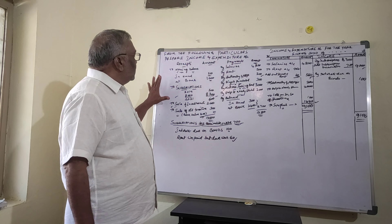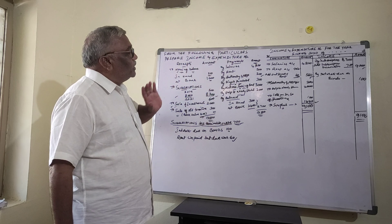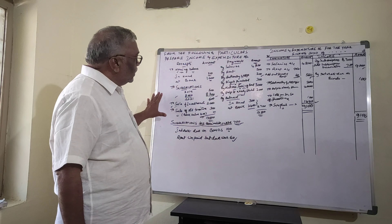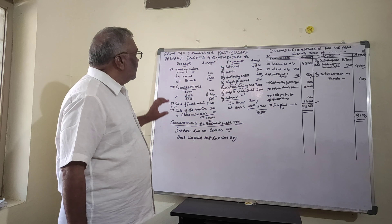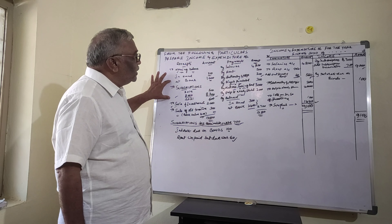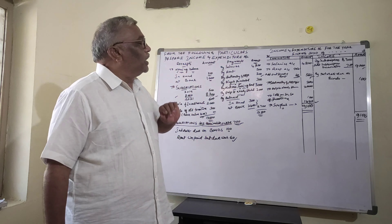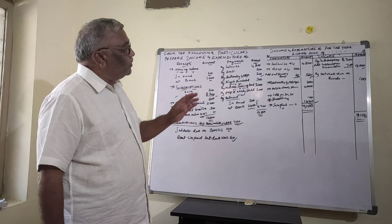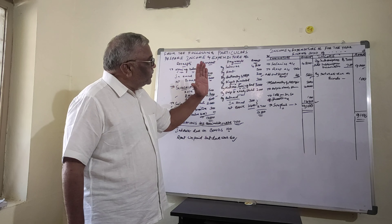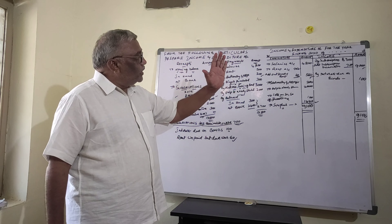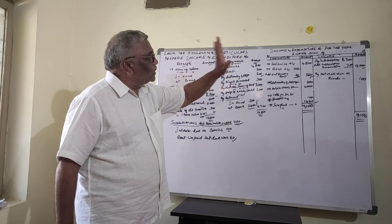In the receipts and payments account, the debit side shows receipts and the credit side shows payments. In the income and expenditure account, debit-side items from receipts are credited as income, and payment-side items are credited as expenditure.